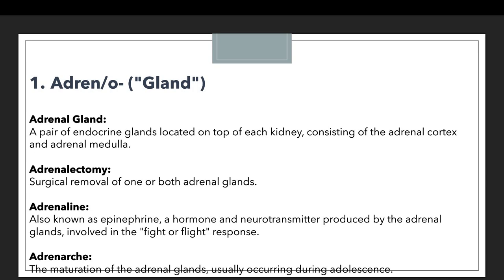Next we have adrenaline, also known as epinephrine — a hormone or neurotransmitter produced by the adrenal gland, involved in the fight-or-flight response. We denote this with the terminology adrenaline, starting with the prefix adren. We also have adrenarche, which means the maturation of the adrenal gland, usually occurring during adolescence. If you look at all these examples, one common element is gland, and that is why we use the prefix adren or adreno.